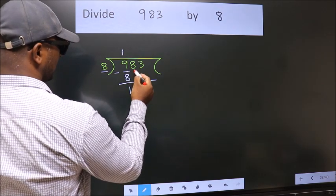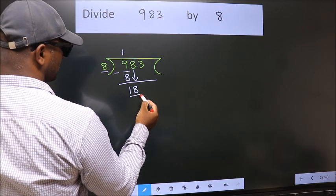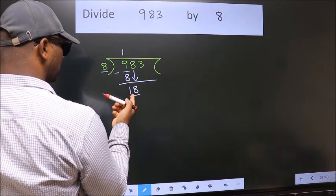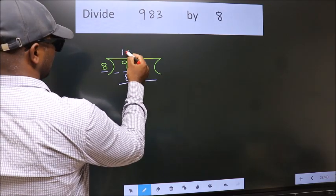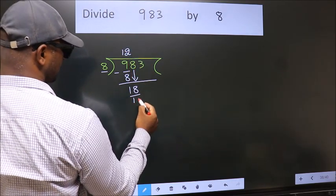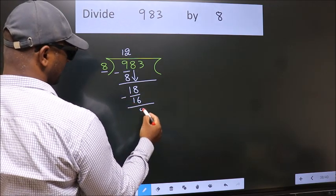After this, bring down the beside number. So, 8 down. So, 18. A number close to 18 in the 8 table is 8 twos, 16. Now we subtract. We get 2.